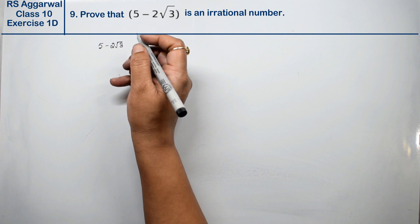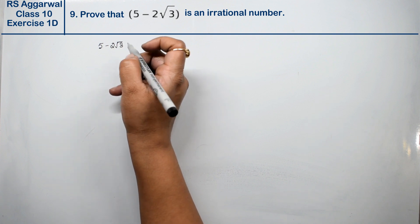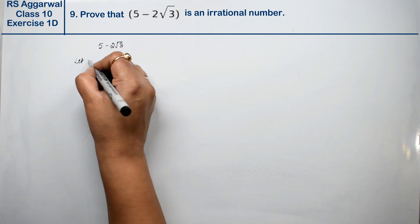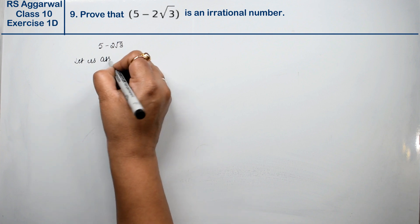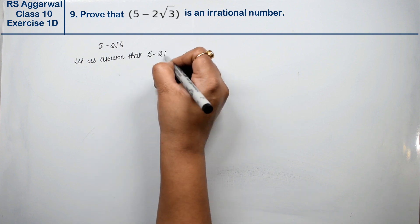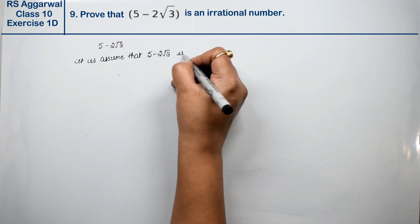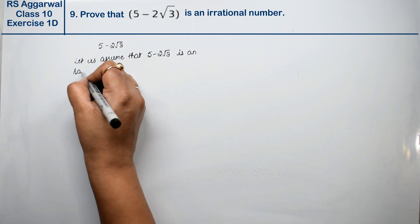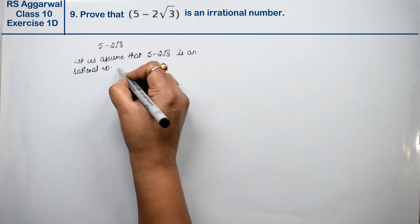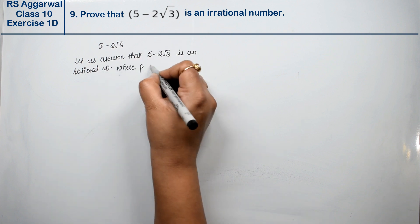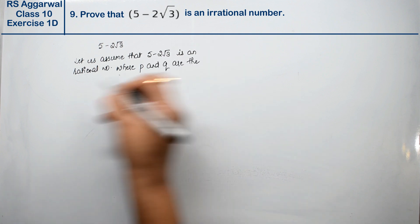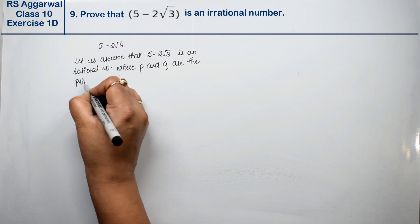Let us assume that 5 minus 2 root 3 is a rational number. A rational number is in the form P upon Q, where P and Q are prime numbers. Prime numbers.